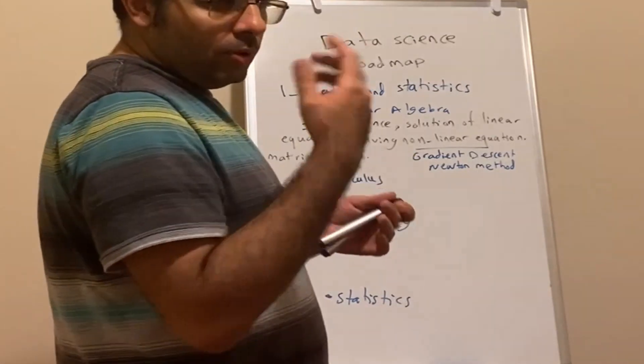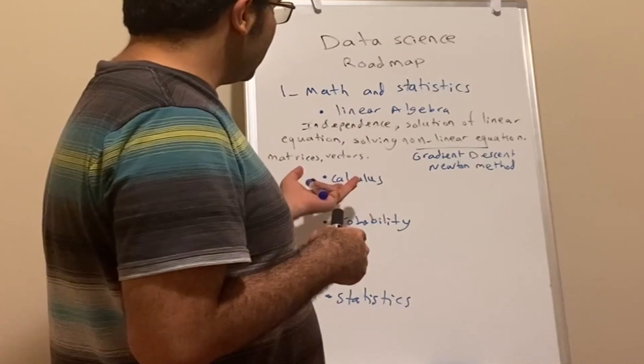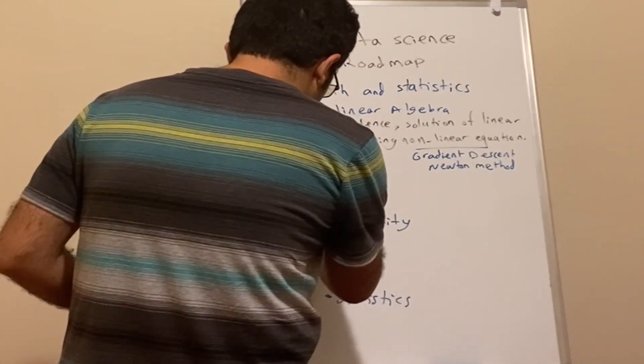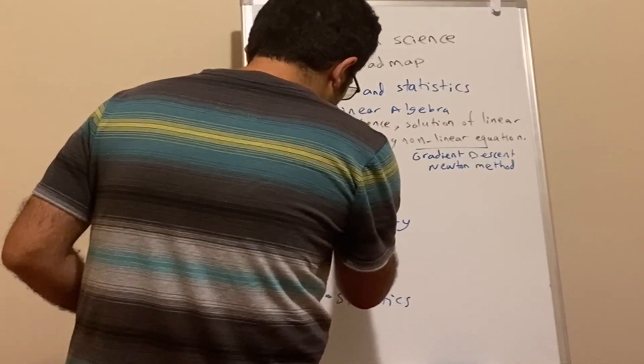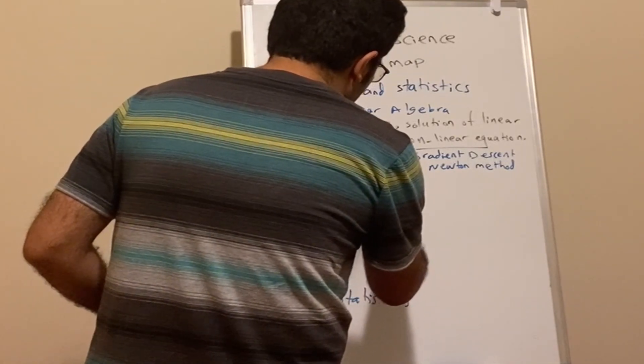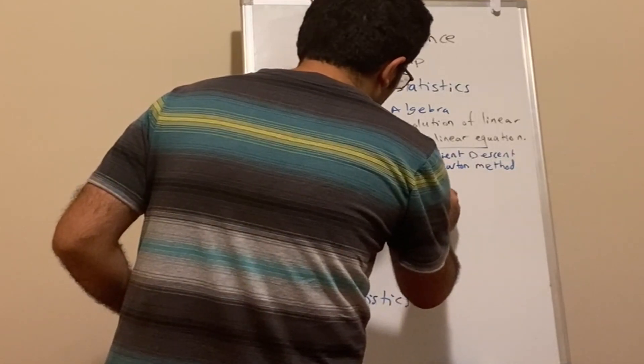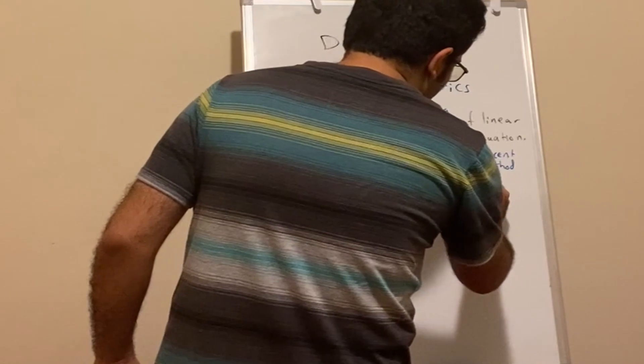For calculus, there's a very rich area of mathematics, but as far as data science is concerned, we need to understand integration and differentiation, precisely chain rule.